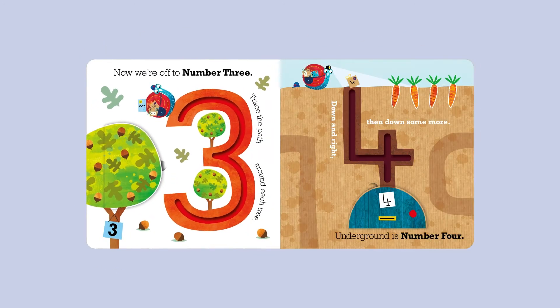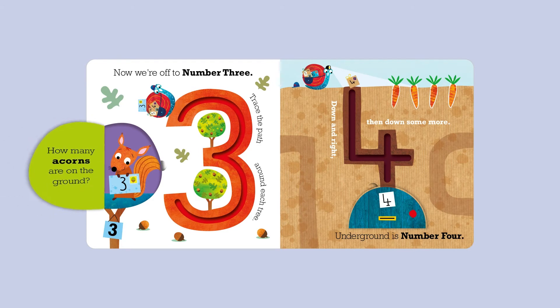Now we're off to number three. Trace the path around each tree. How many acorns are on the ground?